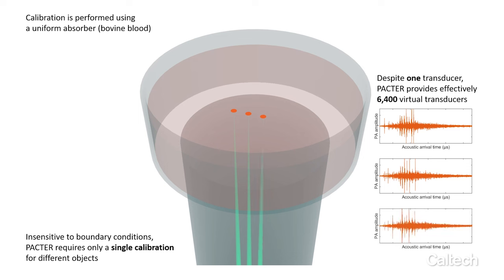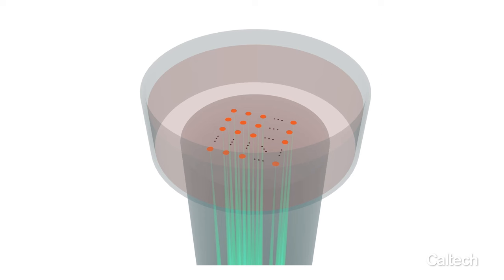Despite the use of a single-element ultrasonic transducer, PACTER provides effectively 6,400 virtual transducers, with each calibration pixel becoming a virtual transducer.